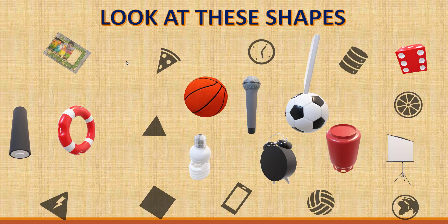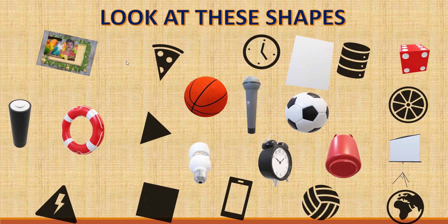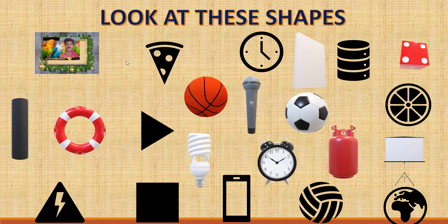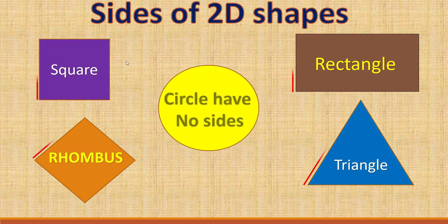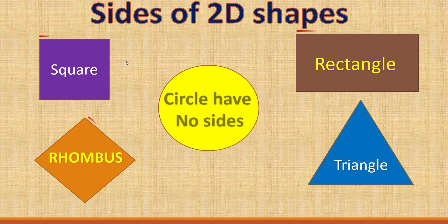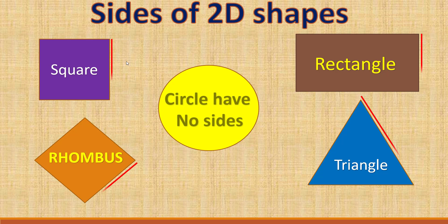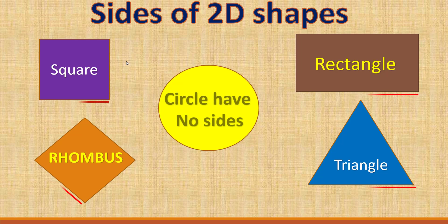Some of the shapes we can rotate and see all the sides. The sides of 2D shapes: the square, the rectangle, and the rhombus each have four sides. Look at the arrow keys — these are the sides. The circle has no sides. The triangle has three sides.